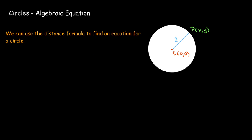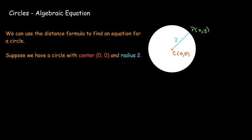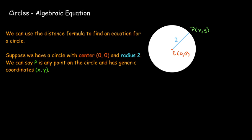We can use the distance formula to find an equation for a circle if we know the radius and the center. Here's an example where we have the center at the origin, (0, 0), and we know the radius is 2. Any point on the circle we'll call P — a generic point. We don't know its x and y coordinates; we just know it's on the circle, so we'll use generic values x and y. Then we apply the distance formula.